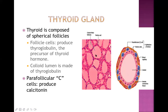Iodine is very necessary for the synthesis of thyroid hormone; without iodine, a person will suffer from hypothyroidism. Apart from the follicular cells, there are parafollicular or C-cells of the thyroid gland - the blue cells in the schematic diagram - and they secrete calcitonin hormone.